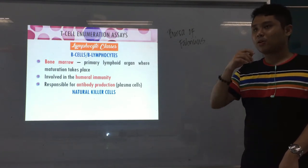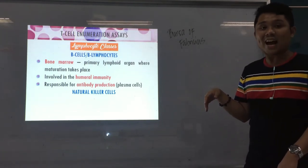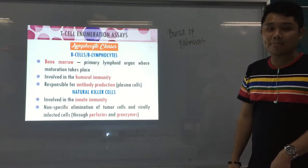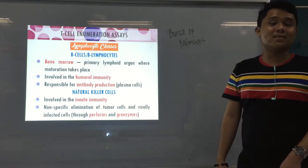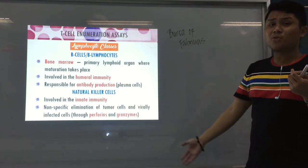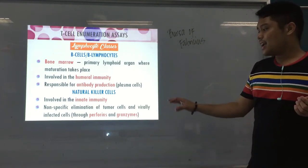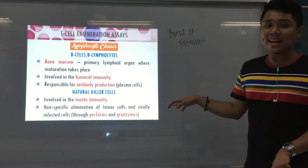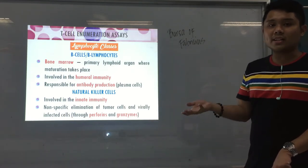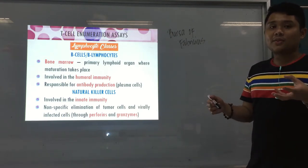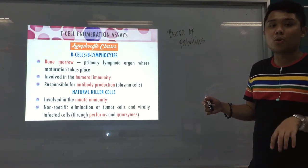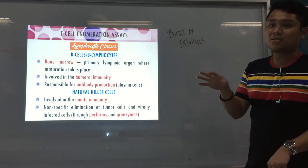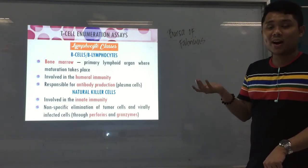The third class is natural killer cells — NK cells. They're involved in innate immunity and have non-specificity, so they are not involved in the adaptive immune response. They release perforins and granzymes: perforins lyse the pathogen, and granzymes are enzymes that destroy the inside of the target cell. NK cells are involved in the clearance of virally infected cells and tumor cells.